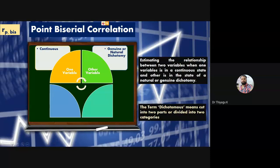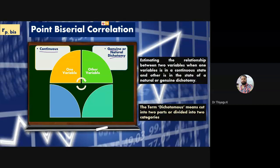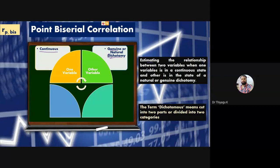Now I'm going to highlight when we can use these things. For doing a point-biserial, we need two variables. The first variable should be continuous. The second variable should be natural — sometimes we use the term genuine variable, true variable, or discrete. These are different names with the same meaning: natural, true, genuine. Dichotomy means a two-category classification in actual order, like male/female, rural/urban, living/dead. We estimate the relation between the two variables — one continuous and one in a natural genuine dichotomy — using the point-biserial.